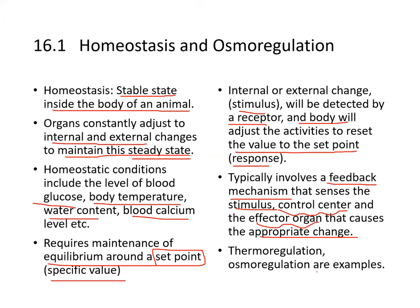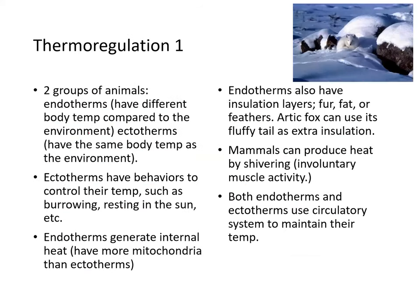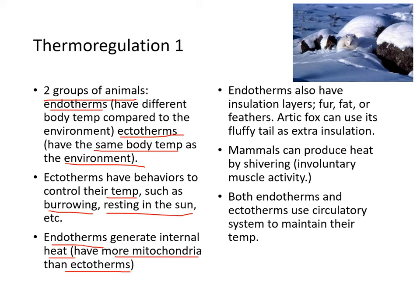Thermal regulation and osmoregulation are two examples of homeostasis. In thermal regulation, there are two groups of animals. Endotherms have different body temperatures compared to the environment. Ectotherms have the same body temperature as the environment. Ectotherms have behaviors to control their temperatures, such as burrowing, resting in the sun, or hiding in the shade. Endotherms generate internal heat and have more mitochondria than ectotherms. Endotherms also have insulation like fur, fat, and feathers. Here's an arctic fox using its fluffy tail as extra insulation. Mammals can produce heat by shivering, which is an involuntary muscle activity.